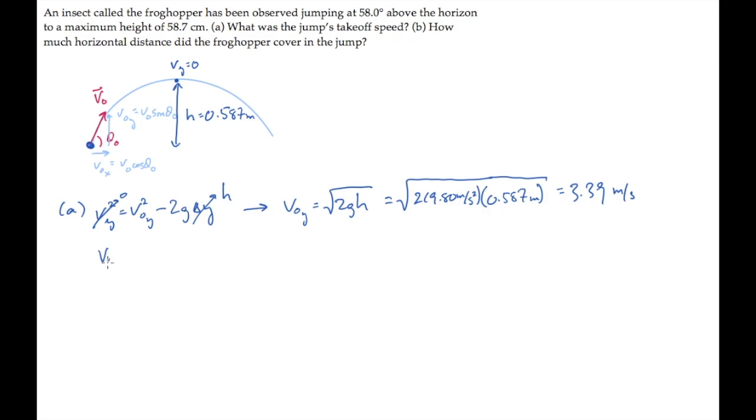And now we can use the expression v0y equals v0 sine theta0 to find the launch speed, that's v0. Solve for that. And substitute values to find that the length of that initial velocity vector is 4 meters per second.